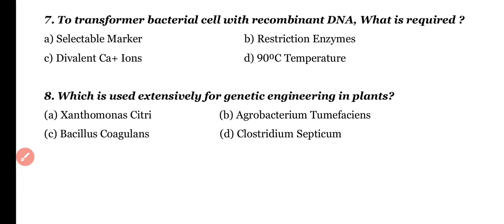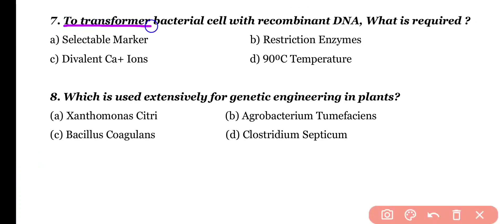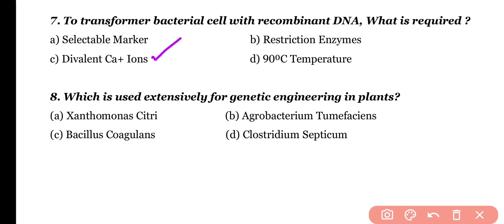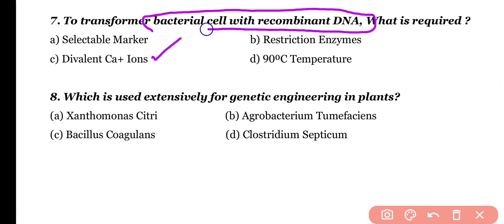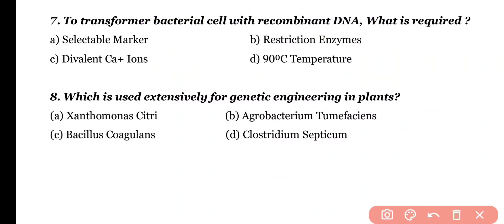Question 7. To transfer a bacterial cell with recombinant DNA, what is required? Selectable marker, restriction enzyme, divalent calcium ions, or 90 degree centigrade temperature. Correct answer is option C. Divalent calcium ions are required to transform a bacterial cell with recombinant DNA because calcium ions make the bacterial cell membrane permeable in order to intake foreign DNA.